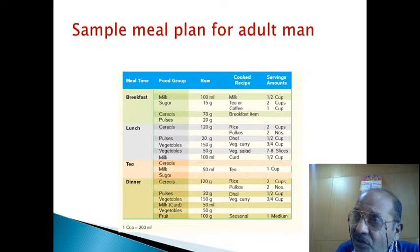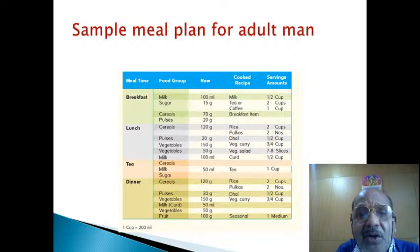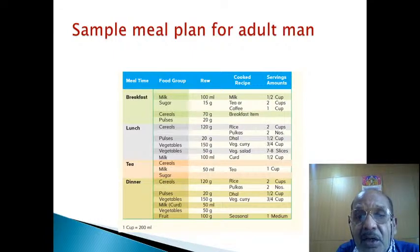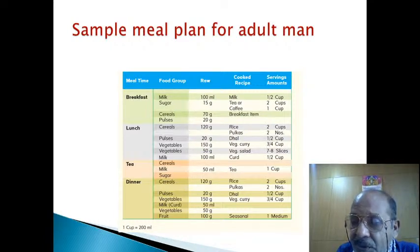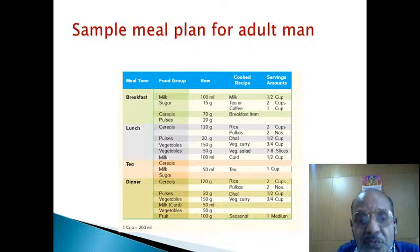Meal is something which is consumed, whereas diet is something which contributes to the meal, or is a raw form of the meal. This is a sample meal plan for adult men. For breakfast, milk should be 100 ml and sugar 15 grams — that is one tablespoonful. The serving amount for tea or coffee is half a cup of milk and one tablespoonful of sugar. That is how you measure and take.